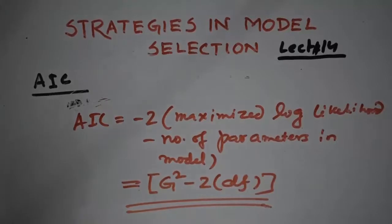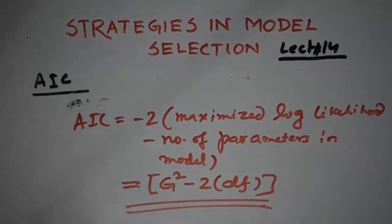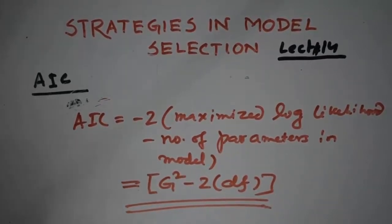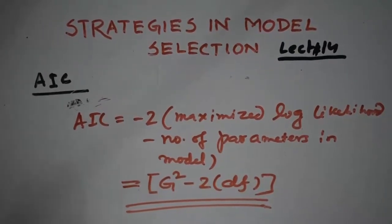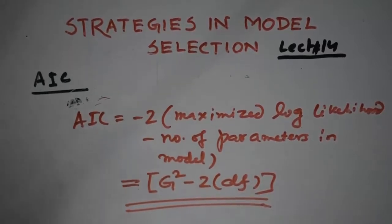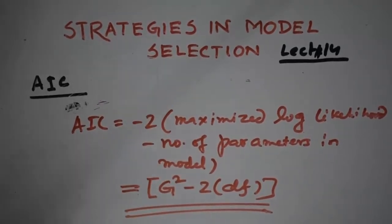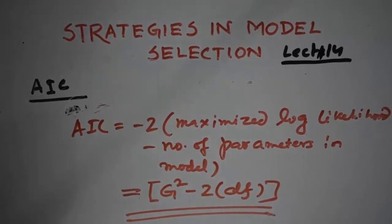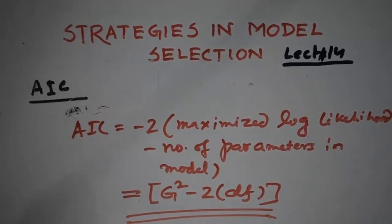So this is all about strategies in model selection. We will discuss next topic, that is the issue of missing observations and overdispersed models in our next lectures. Before starting this topic, I illustrate logistic regression with some examples via R language. So please till then, please stay with us. Thank you.